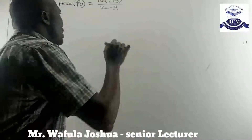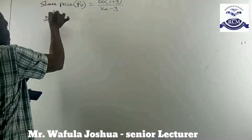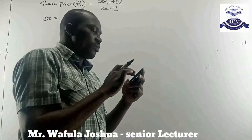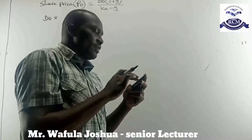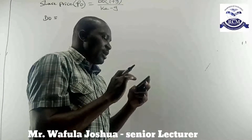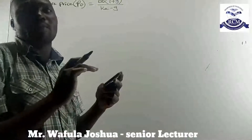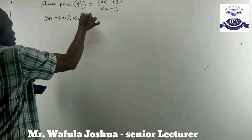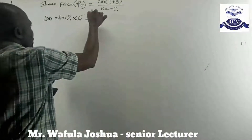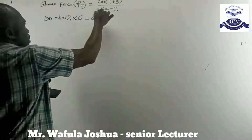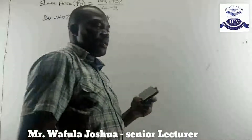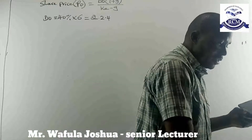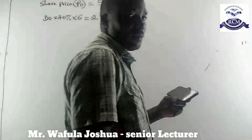Let us get the variables. Our D0 — the current year's dividends. The earnings per share is 6 shillings and the payout ratio: when retaining 60%, we are paying out 40%. So our dividends become 40% of 6 shillings, which is 2.4.